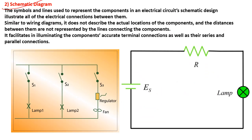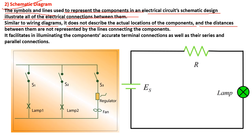The next one is schematic diagram. The schematic diagram uses symbols and lines to represent the components in an electrical circuit. Schematic design illustrates all the electrical connections between components. Similar to a wiring diagram, it does not describe the actual location of the components, and the distance between them is not represented by the connecting lines. The schematic diagram facilitates identifying components, accurate terminals, connections, as well as their series and parallel connections.